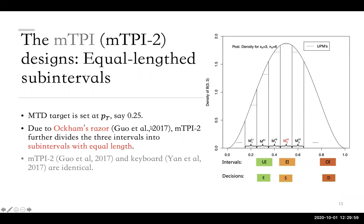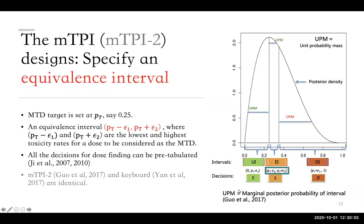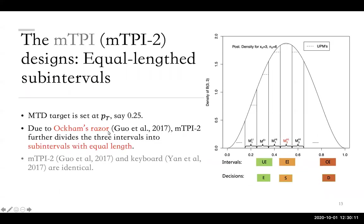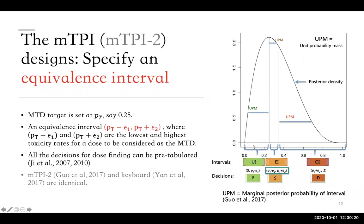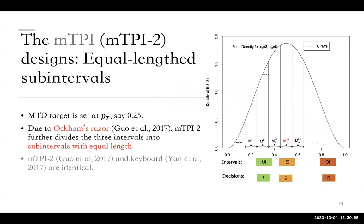Just a little bit on the MTPI-2. It turns out originally in the MTPI there were only three intervals: the middle equivalence interval — the smallest one — the interval to the left from zero to the left boundary, the underdosing interval, and to the right the overdosing interval. The MTPI-2 design divides the left and right larger intervals into smaller sub-intervals with equal lengths — the same length as the equivalence interval. Based on the UPM and the marginal posterior probability inference, there is something called Occam's razor — a Bayesian term for model selection based on penalized likelihood — which penalizes the inference of the underdosing and overdosing intervals, which are longer than the equivalence interval.